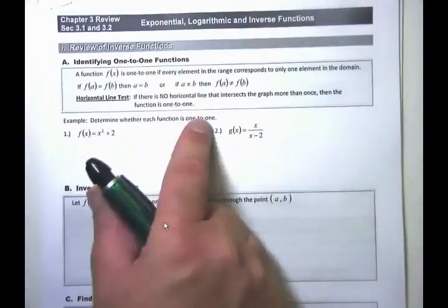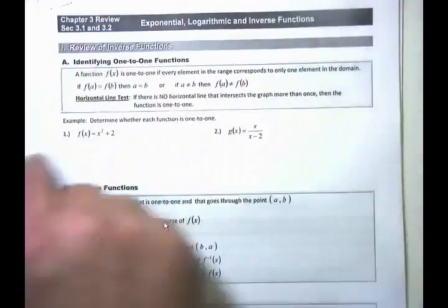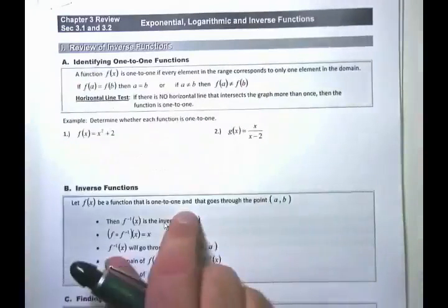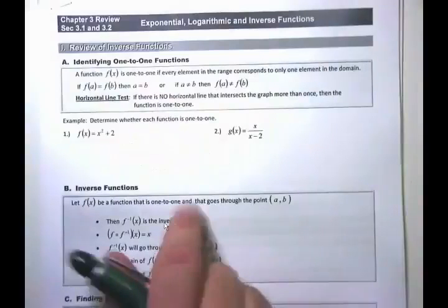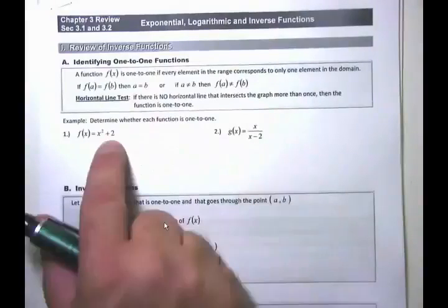To determine a one-to-one function, you use the horizontal line test. The horizontal line runs from side to side. If a horizontal line intersects the graph more than once, it is not a one-to-one function. But if it only intersects once, it is a one-to-one function.